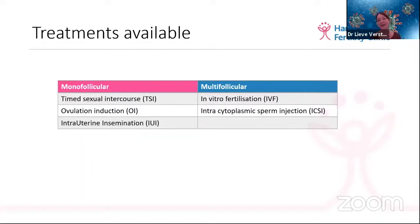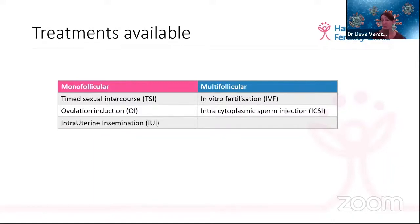We only want one follicle for timed sexual intercourse and intrauterine insemination because, in contrast to IVF, where we collect all the eggs, fertilize them outside the body, and decide how many embryos to transfer — in timed intercourse or IUI we can't control how many eggs are fertilized. If a patient has four or five follicles and sperm is injected into the uterus, there's a big risk of a multiple pregnancy. That's why we distinguish between monofollicular and multifollicular stimulation.